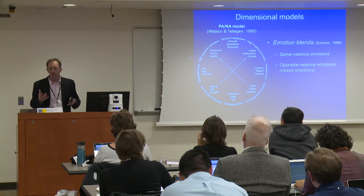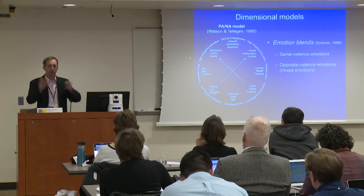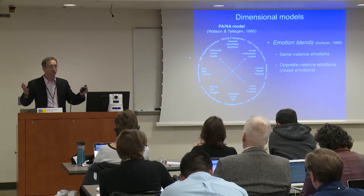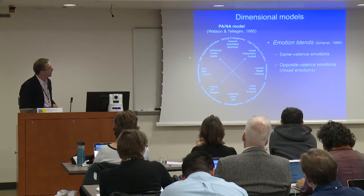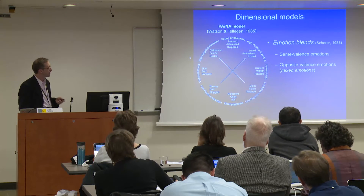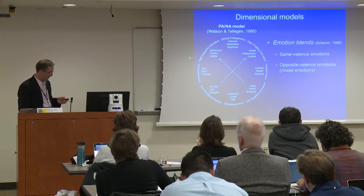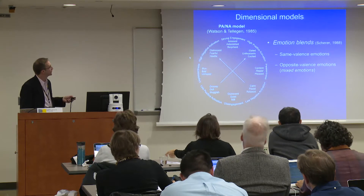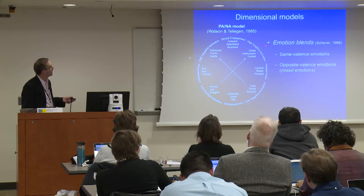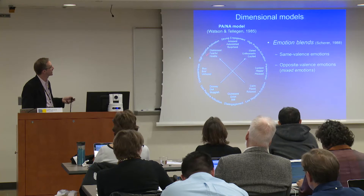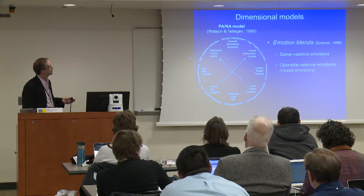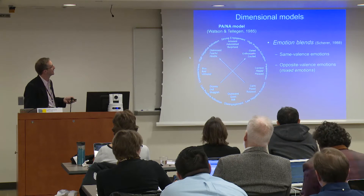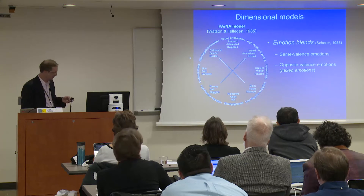There's another type of blend — opposite valence emotions, positive and negative emotions. I call these types of emotion blends mixed emotions. These models also allow for opposite valence emotions. For instance, if we have high positive activation and high negative activation, they're only 90 degrees away, giving rise to the opportunity for mixed emotions of being excited and distressed.